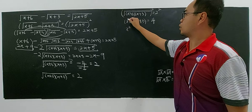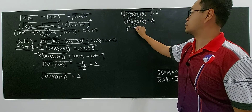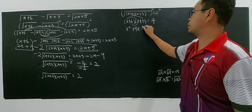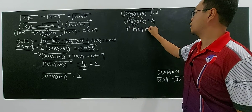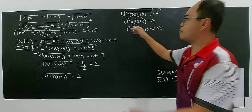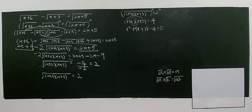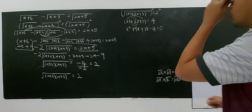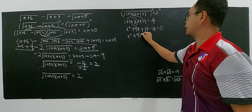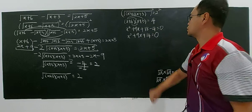Now it turns into a quadratic. Expanding (x+6)(x+3): x squared plus 3x plus 6x gives 9x, and 6 times 3 is 18. Bringing 4 over gives minus 4. So you have x squared plus 9x plus 14 equals 0.